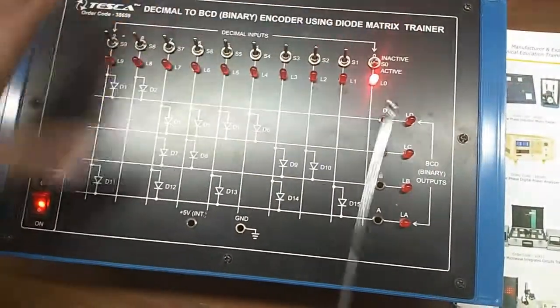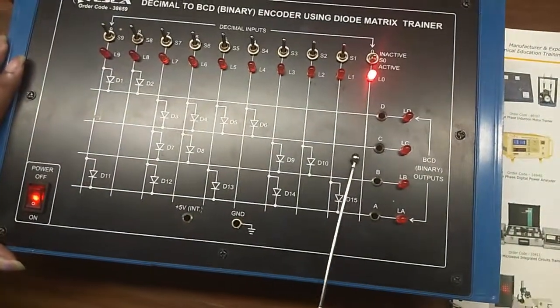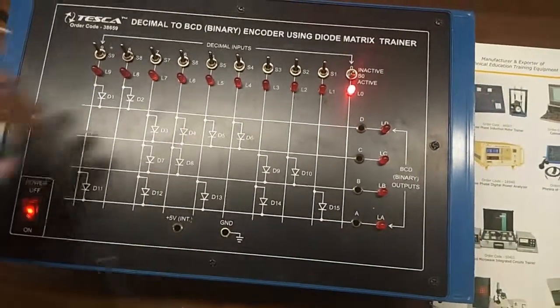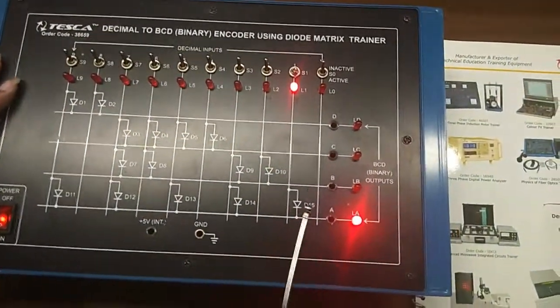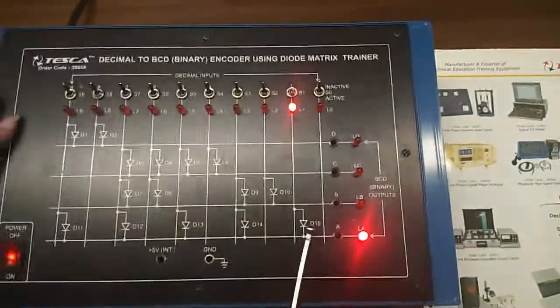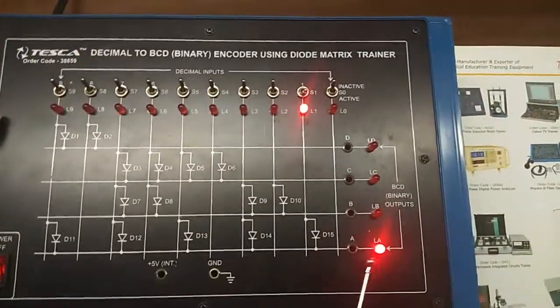I am giving input 0 here. No diode is there, so there will be no output. Now, I am giving S1 input. Here D15 diode is in on status and it is giving logic 1.